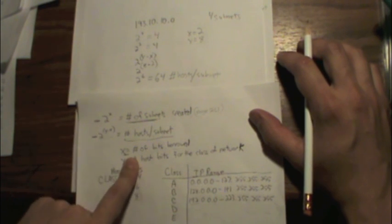How do we determine the mask? We determine the mask by looking at the number of bits borrowed. We know we're dealing with a class C. We know that the number of bits borrowed is 2.